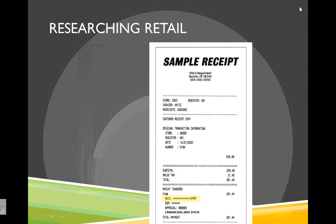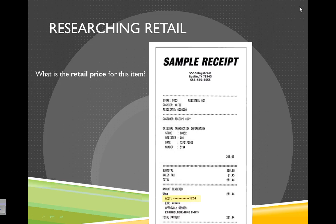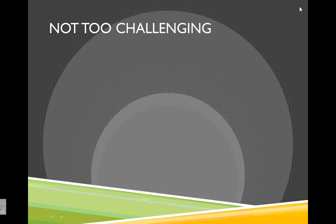We can also look at a receipt and think: what is the retail price for this item? It's listed right on the receipt. So the information for this is very easy to find — it's displayed in the store and on the receipts, so it's not too challenging. We will practice this with some items this week. I'll give you some items and we will practice finding the retail price and where it came from.